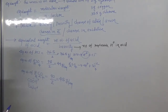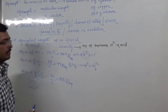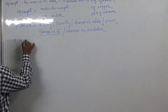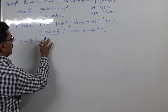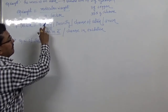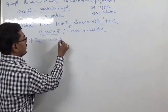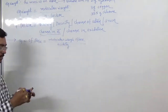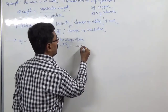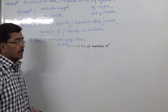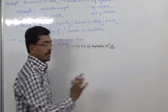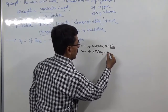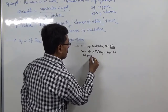Now we can also find equivalent weight of a base using this formula: equivalent weight of base equals molecular weight of base divided by acidity. Acidity is the number of replaceable hydroxyl ions, or the number of H⁺ ions required to neutralize the base.